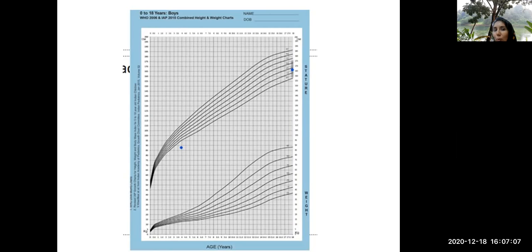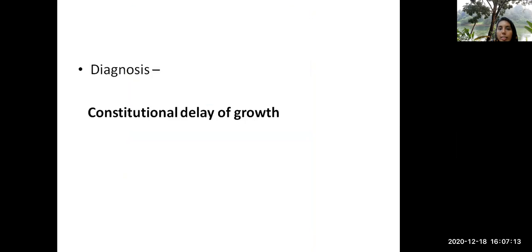So here, there is another clue to the diagnosis because there is a history of delayed puberty. With all these things, when you work together, this is the diagnosis you've got. This is constitutional delay of growth or CDG we call it. So in this session, we have discussed about familial short stature and constitutional delay of growth.